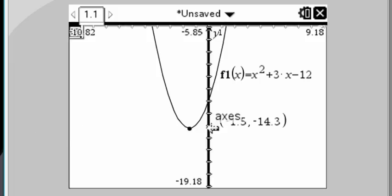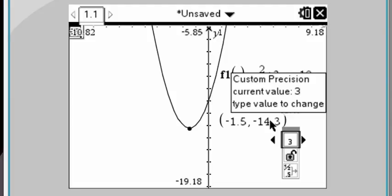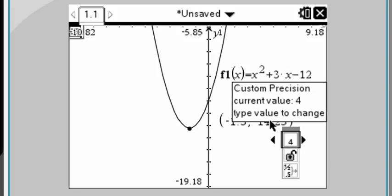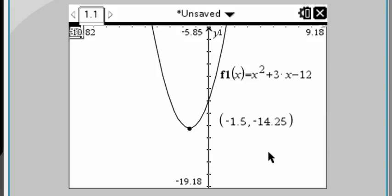Now here's where you can guide over here. And it's changed to kind of a dotted arrow. Select the text. And now you'll see custom value precision. You can use the arrow keys on your calculator to increase it to 4. And then press enter. And now we see that the true value of the y-coordinate is negative 14.25.